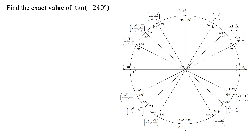In this example, I need to find the exact value of the tangent of negative 240 degrees. As the problem states exact value, I can't use my calculator as that will give me a decimal approximation. I need to use the unit circle shown over here.